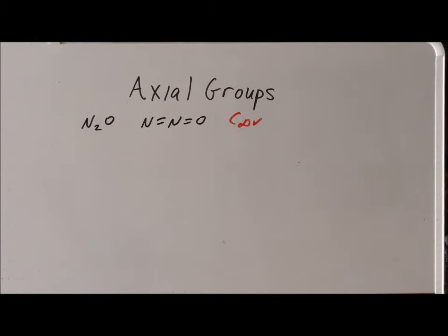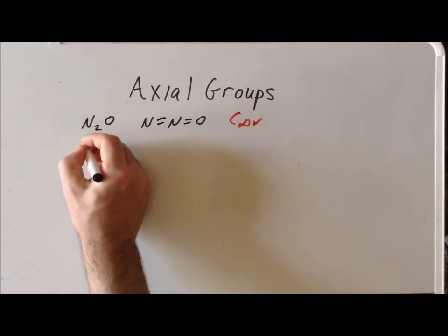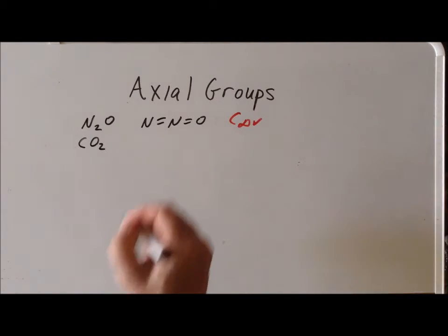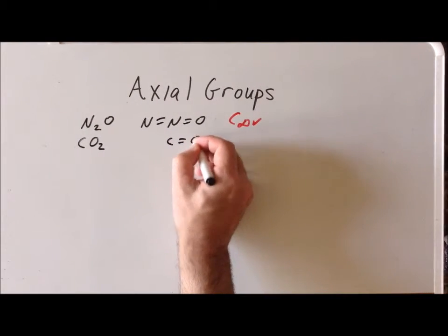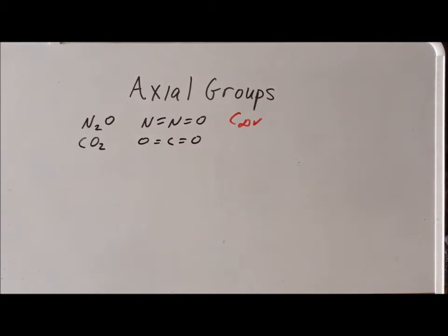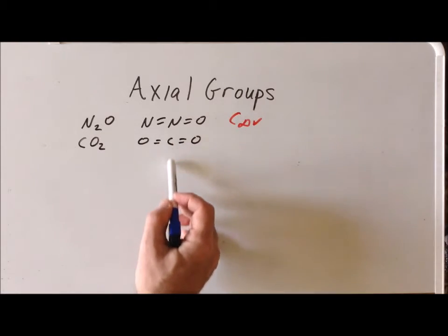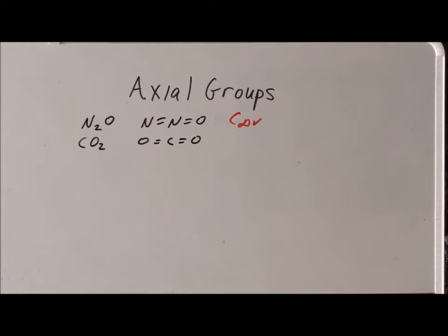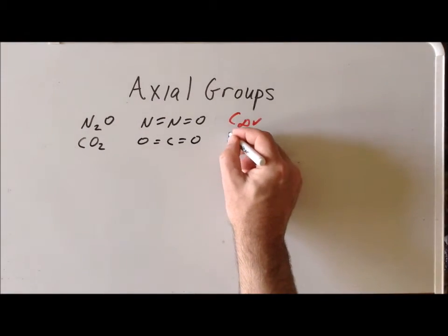Another extremely important example of a linear molecule is carbon dioxide, CO2. Its Lewis dot structure shows carbon double bonded to two different oxygen atoms. By VSEPR arguments, this molecule has to be linear. If we reflect through a mirror plane going through the central carbon atom, it will reflect oxygen into oxygen. Therefore, we do have a horizontal mirror, and this molecule belongs to the point group D∞h.